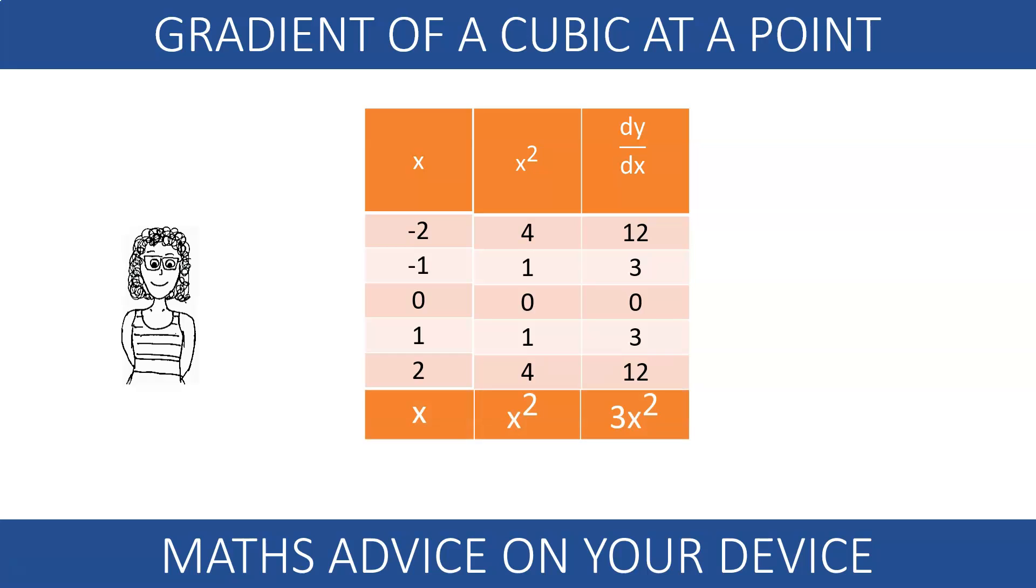It is three times bigger. The gradient function of x cubed is 3x squared.